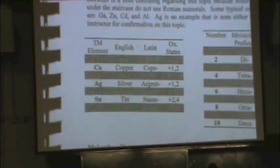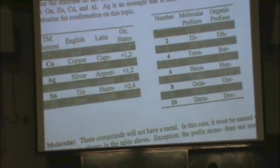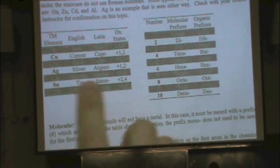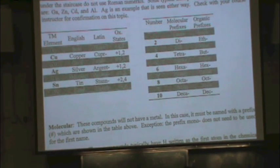A couple more things. Again, I'll just show you the reader. This table here on the left-hand side. When you have a transition metal, you'll see when we do examples. I just want to alert you to it ahead of time. Some of them can be named in Latin. And here are some of the examples. Iron, copper, silver, gold, mercury, tin, and lead can all be named in Latin.